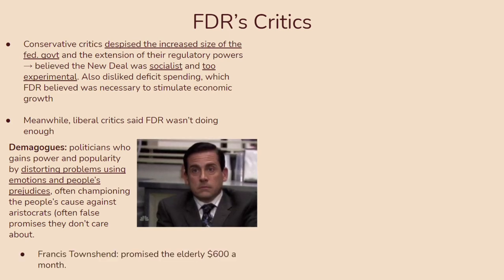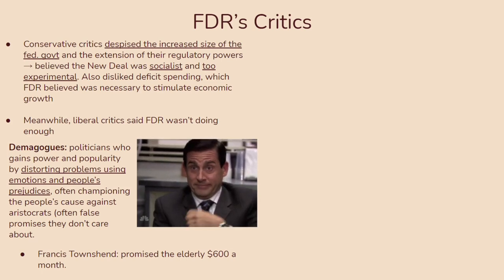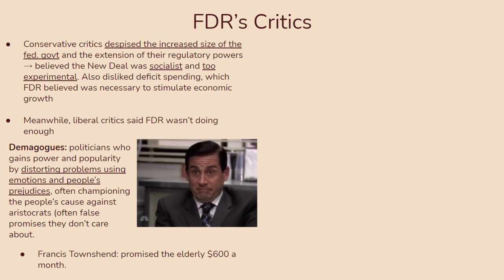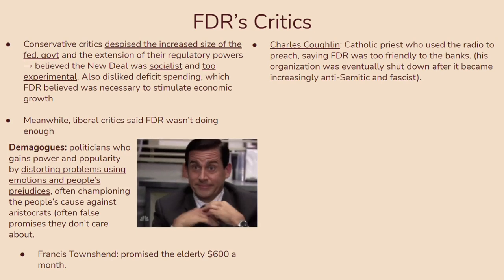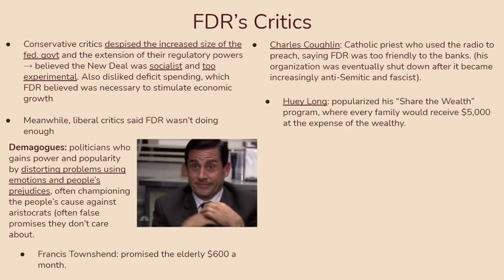For example, Francis Townshend promised the elderly that they would get $600 a month if he came to power. Obviously he couldn't follow through with that because $600 at the time was a lot of money, especially during a depression — so it was really all talk. Another demagogue you should know about is Charles Coughlin, a Catholic priest who used the radio to preach things saying that FDR was too friendly to the banks and didn't really care about the people. His organization was eventually shut down after it became increasingly anti-semitic and fascist.